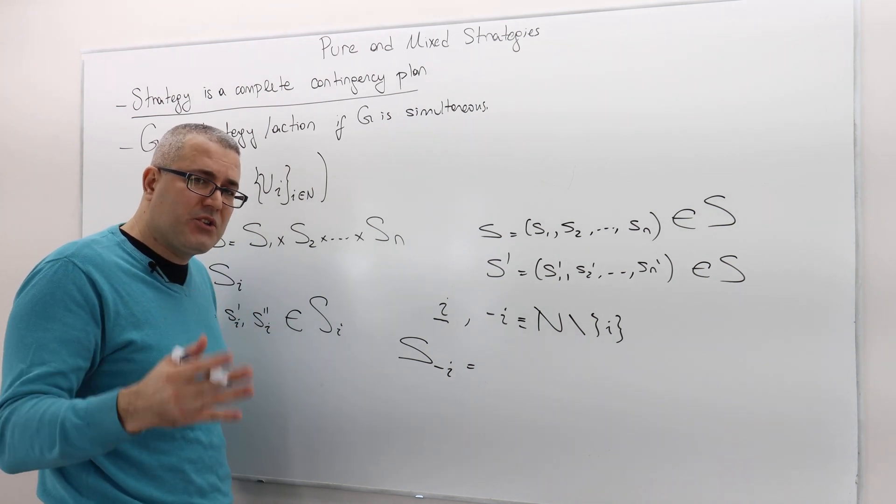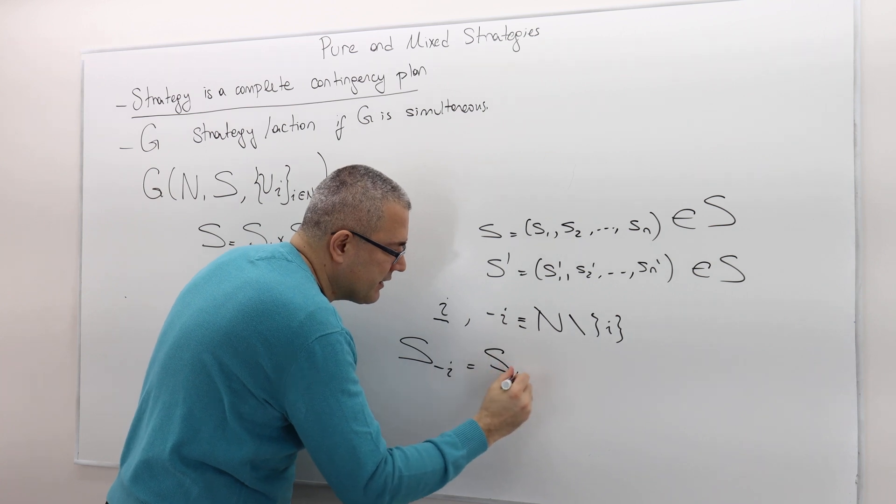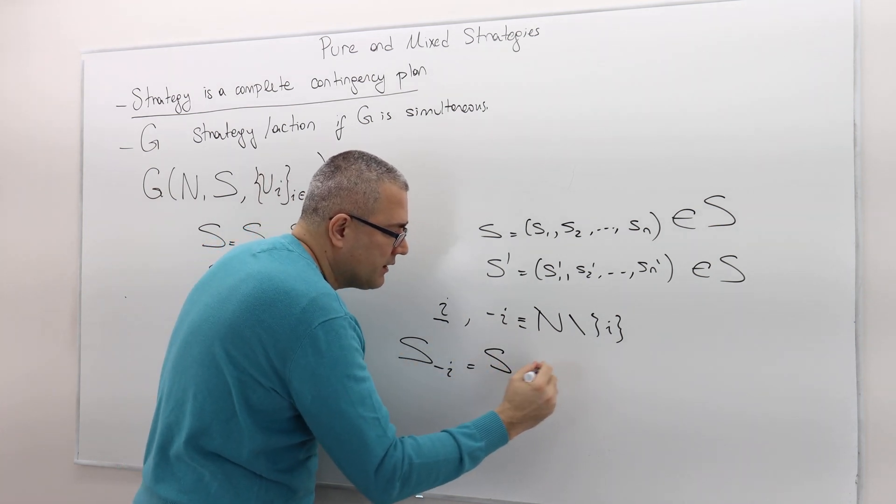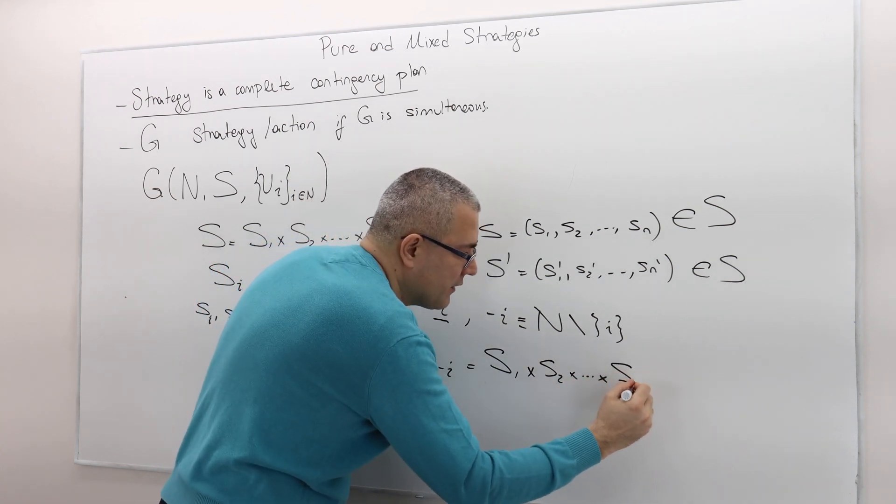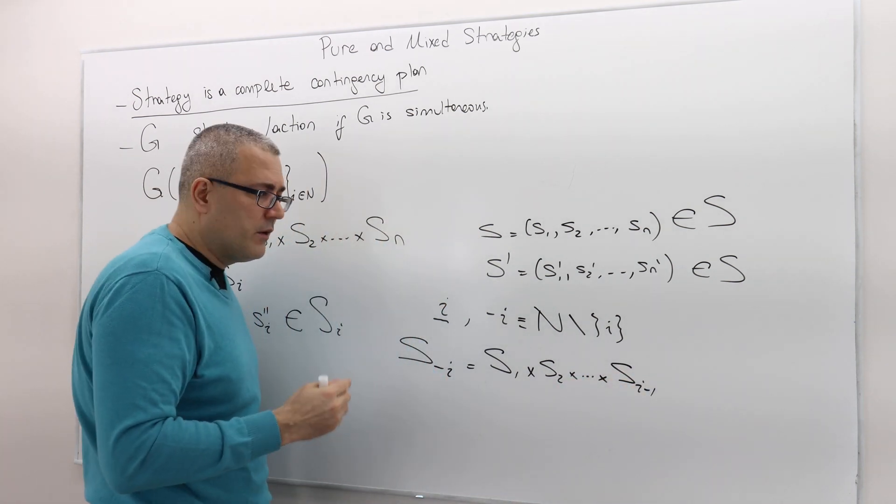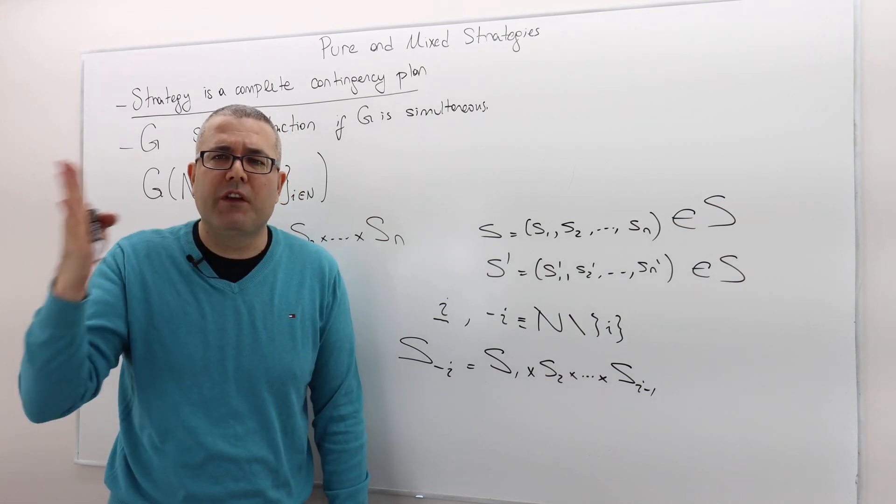We do not take the Cartesian product of N or all of the players. We take the Cartesian product of all the players' strategy sets except player I. So it's basically Cartesian product of S1 times S2 times all the way to S_{I-1}.